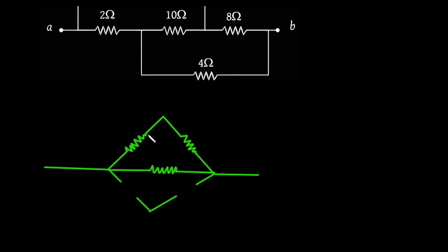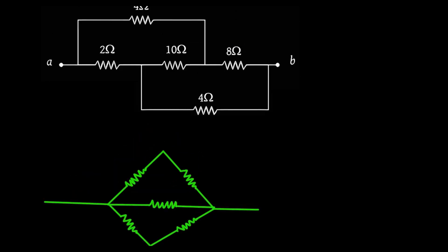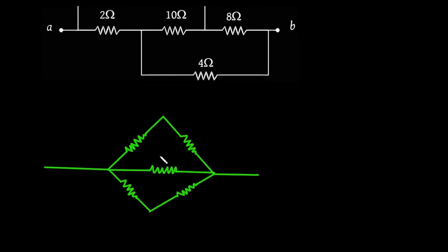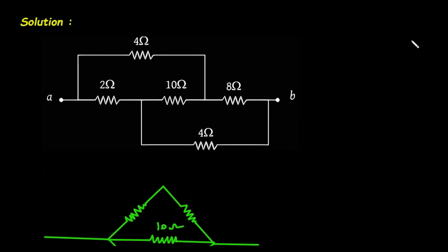Now we have to check whether the bridge is balanced or not. Here in the middle, this resistance is 10 Ohm. We can see this resistance is 10 Ohm. Now, what we will do — we will put A.